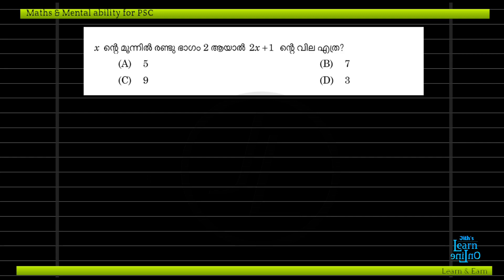Let's get started. Let's talk about 2x. If x is equal to 3, then x is equal to 3. If x is equal to 3, then multiply by 2. That's why x is equal to 3, and this is equal to 2 by 3.